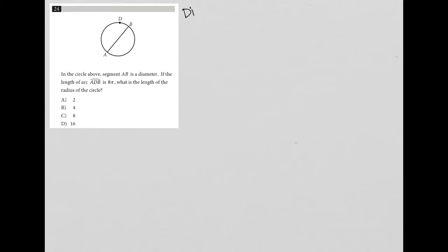So this is a diagram question. We know that just because of the circle that we're given here. Looks like AB is a diameter. But let's read through this and see what other information they give us.